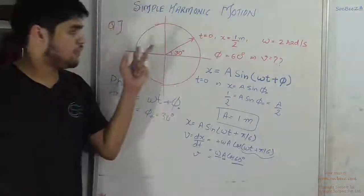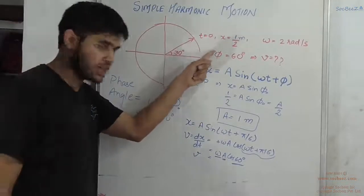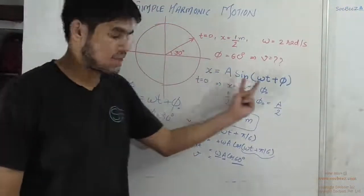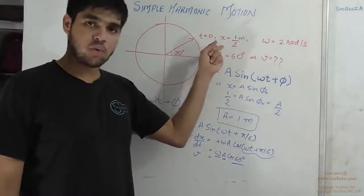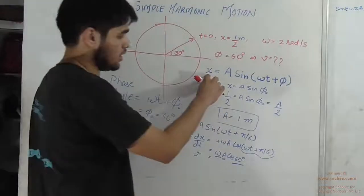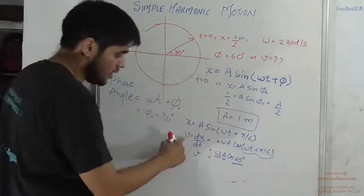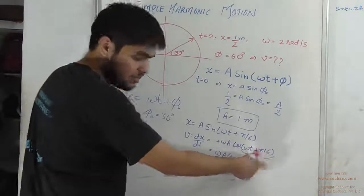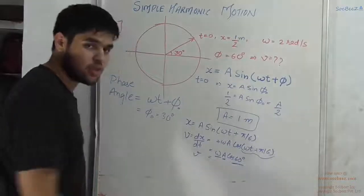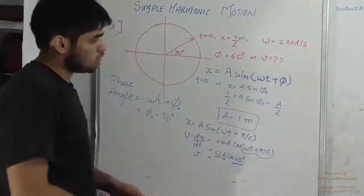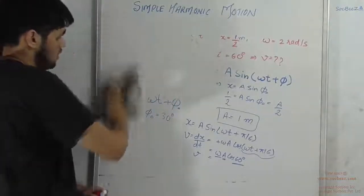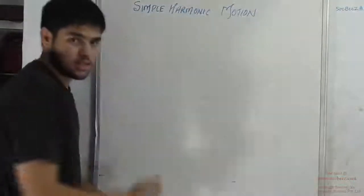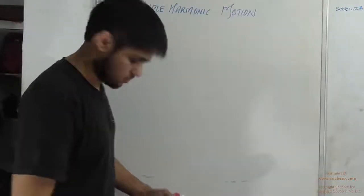So you have seen that only a phase diagram and initial conditions were given. We assumed the form of x, applied initial quantities to get the value of amplitude a, differentiated to get velocity as a function of time, and substituted values to get the velocity. In this way, a phasor diagram can be used to determine certain parameters. Next time we will study more questions on simple harmonic motion.